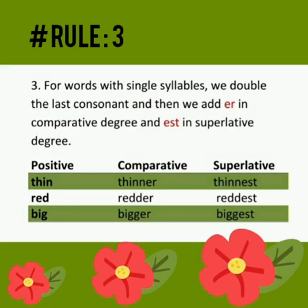For words with single syllables, we double the last consonant and then add ER in comparative degree and EST in superlative degree. For example: thin, thinner, thinnest; red, redder, reddest; big, bigger, biggest.